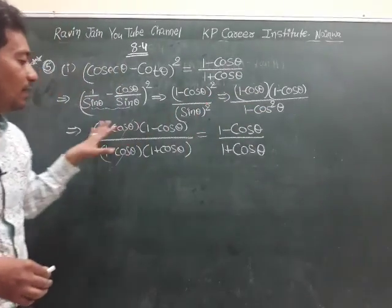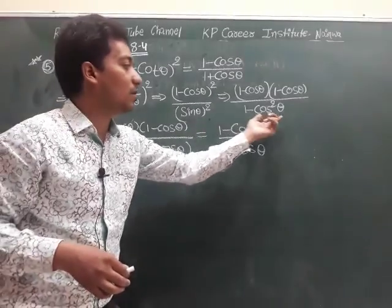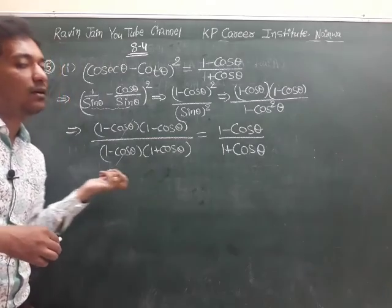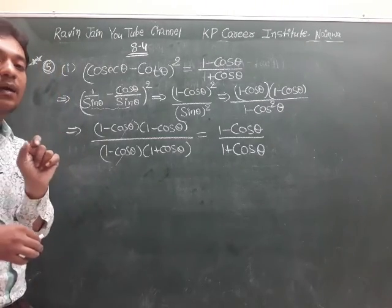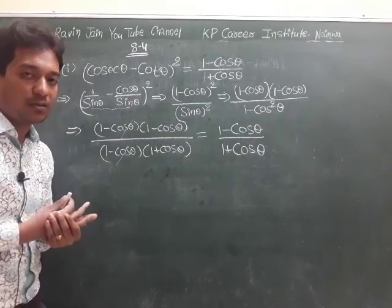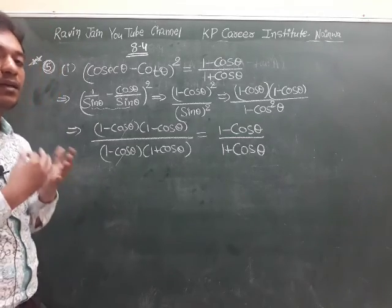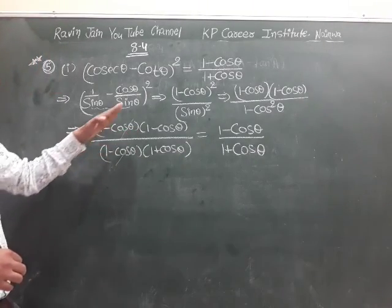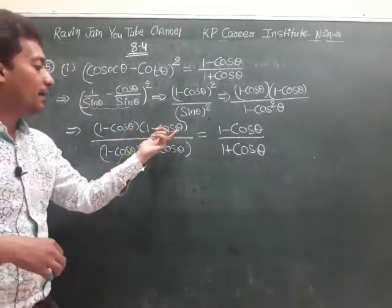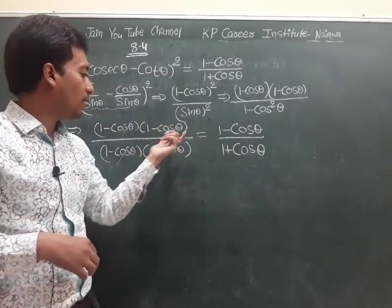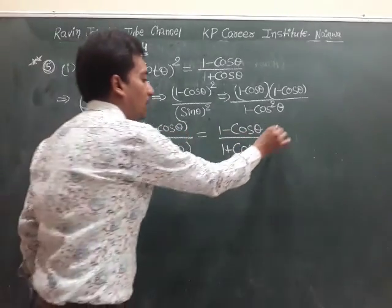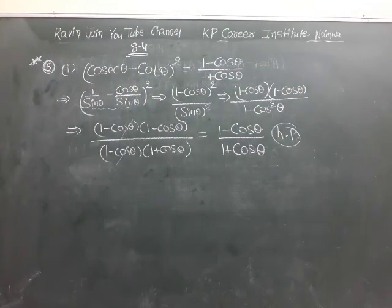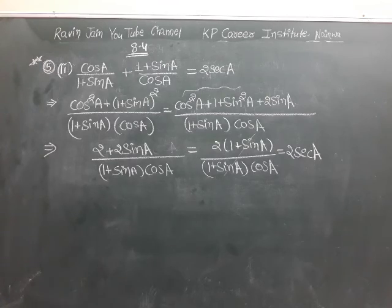Now, (1 - cos θ)(1 - cos θ) is in the numerator, and (1 - cos²θ) in the denominator has been converted to (1 - cos θ)(1 + cos θ). One factor of (1 - cos θ) cancels, leaving (1 - cos θ)/(1 + cos θ). This is exactly what we had to prove.